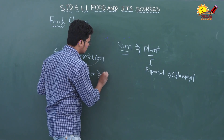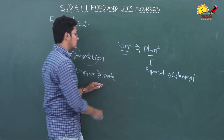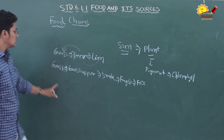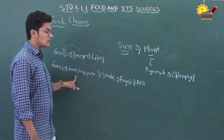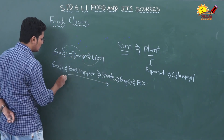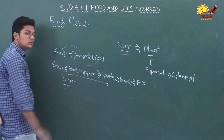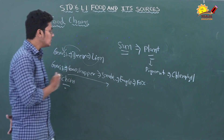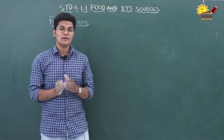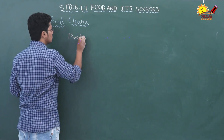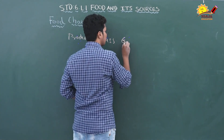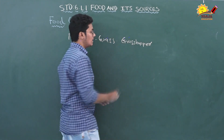Another example: grass is eaten by grasshopper, grasshopper is eaten by snake, and snake is eaten by eagle. You can see that grasshopper depends on grass, snake depends on grasshopper, eagle depends on snake — this creates a chain. This chain is known as food chain because they all depend on each other for food. The organism at the first level of the food chain is always known as the producer. For example, grass is the producer, and grasshoppers are the primary consumers.